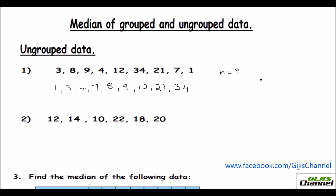When the n is odd, this is odd number, all you need to do is find out n plus 1 over 2th item. So n plus 1 is 9 plus 1 by 2, so that is 10 by 2, that is 5.